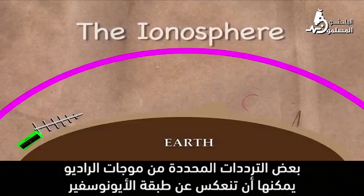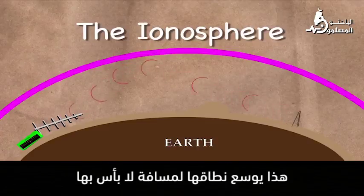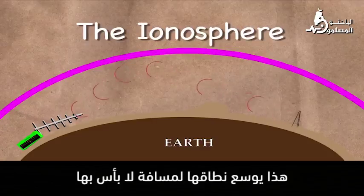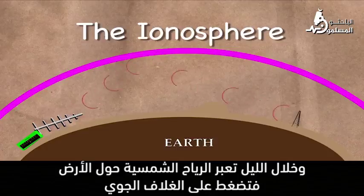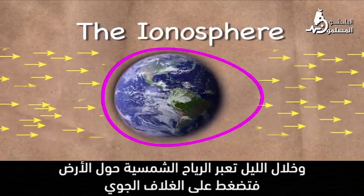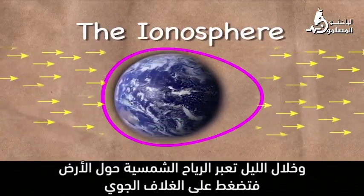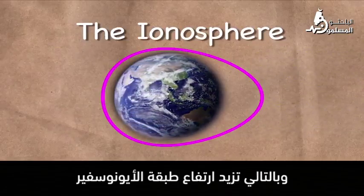Certain frequencies of radio waves are capable of bouncing off the ionosphere. This can extend their range by quite a bit. The ionosphere's height is affected by the solar winds, and during the night the solar winds pass around the earth and pull out on the atmosphere, thus raising the ionosphere.